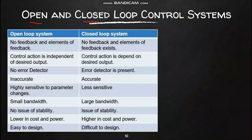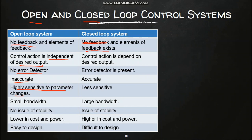Another important classification is based on the presence or absence of feedback: open loop and closed loop control systems. An open loop control system does not have feedback, whereas a closed loop control system has feedback. Without feedback, the control action is independent of the desired output because the output is never measured and fed back to the input. With no feedback, there is no error detector, making the system inaccurate and highly sensitive to parameter changes. In a closed loop system, feedback exists, so the control action depends on the desired output and any error present in the output is detected.